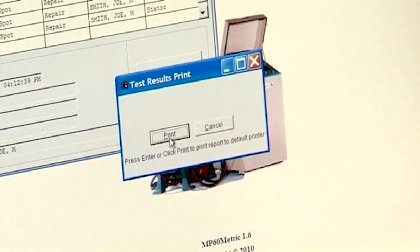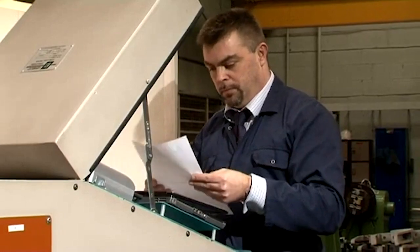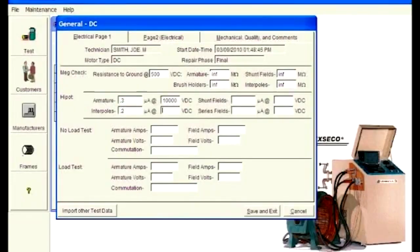In every case the test data is saved to the database and a test report can be printed off. There is also a facility to enter and save to the database general test data including winding resistance values, insulation resistance, test currents and temperatures.